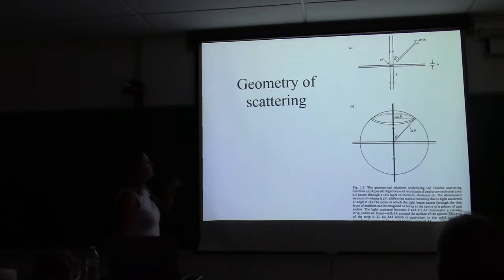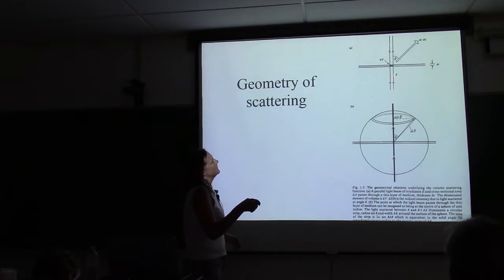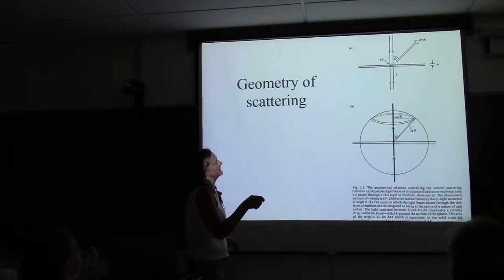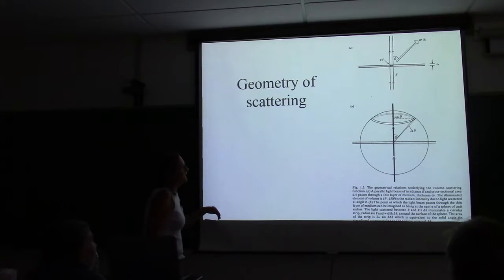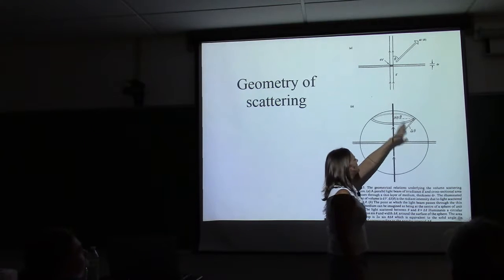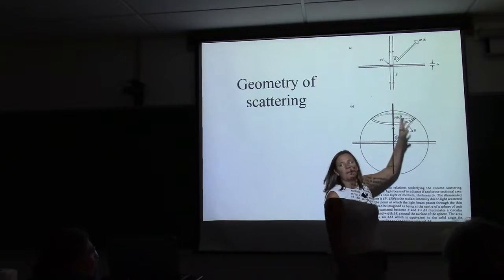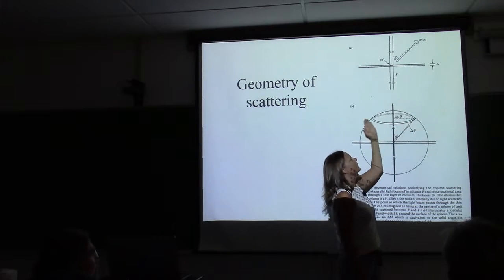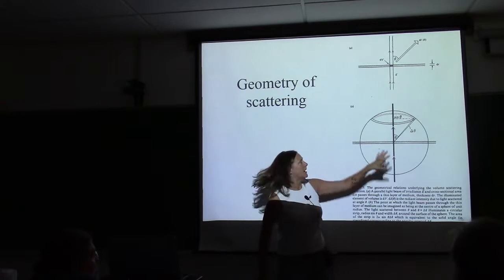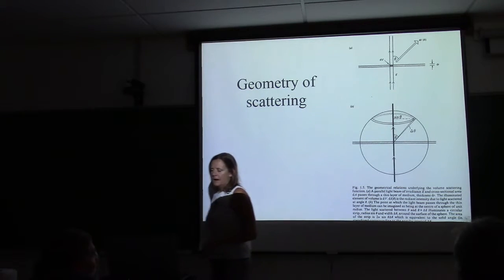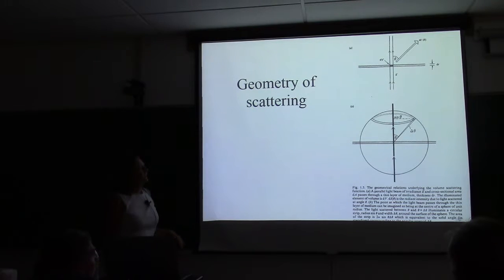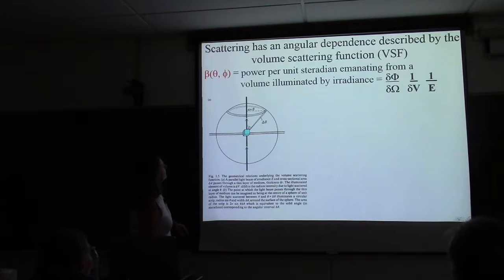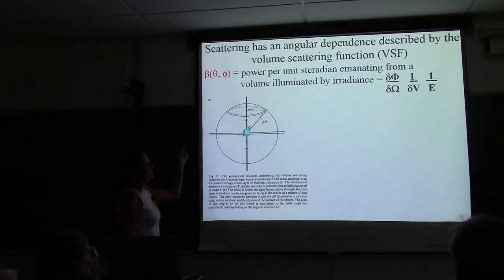Thinking briefly about the geometry of scattering: here you have incident irradiance, this is the direction of propagation, and any redirection of light at some angle theta would be the scattering angle. Thinking about it in three dimensions — Kurt showed a diagram very similar to this — if you have azimuthal symmetry, the scattering at angle theta would be uniform about the azimuth. We often assume azimuthal symmetry; it makes the diagrams and the math easier. That angular dependence of scattering is described by the volume scattering function.